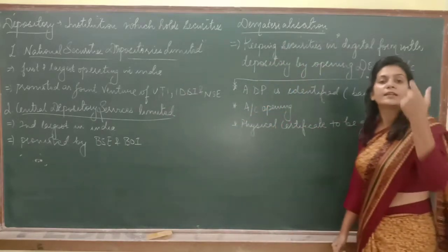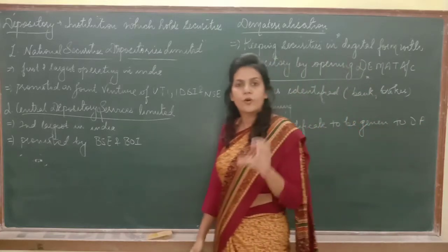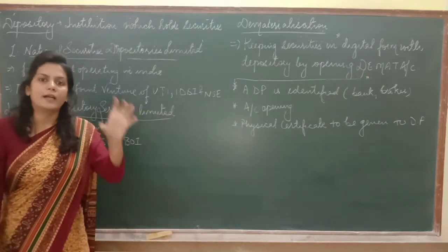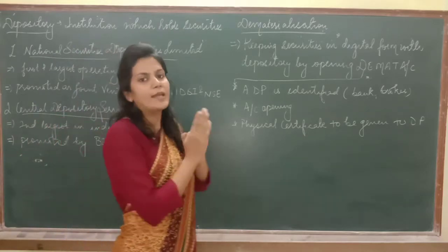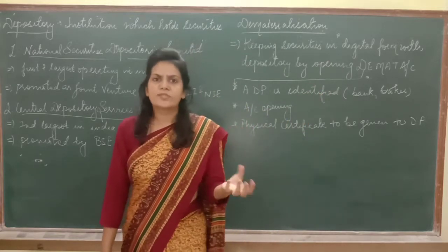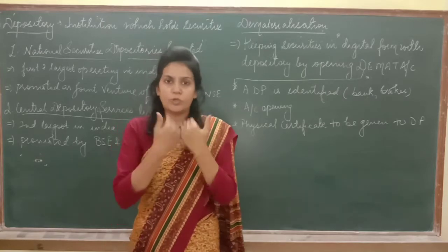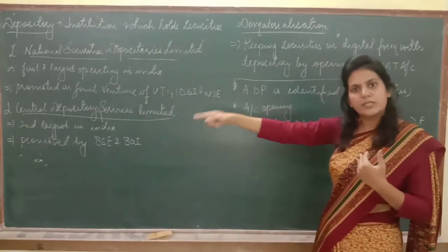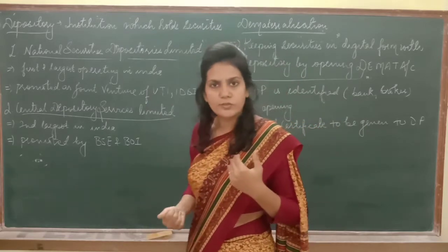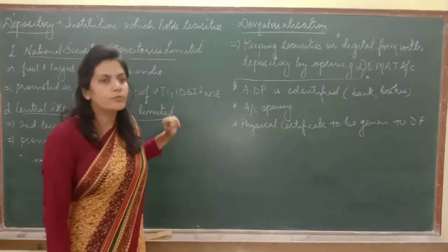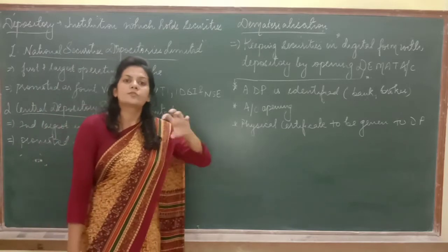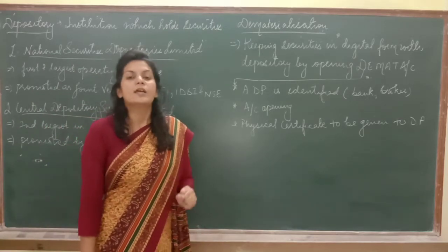We need to keep our shares in digital form with these depositories. They keep our shares in an account, so we need to open an account with them. The name of that account is a demat account. We can open it with either the depository directly or with a depository participant. This demat account is opened so that we can buy and sell securities in electronic form.